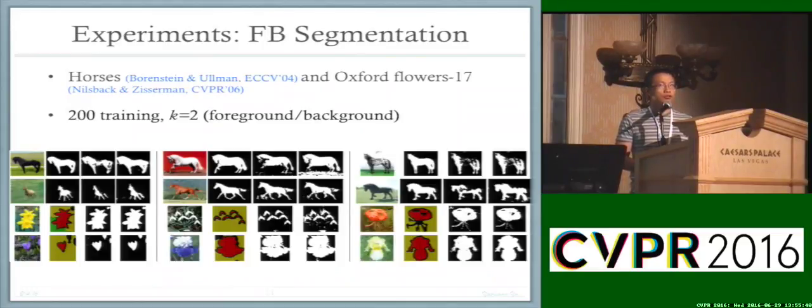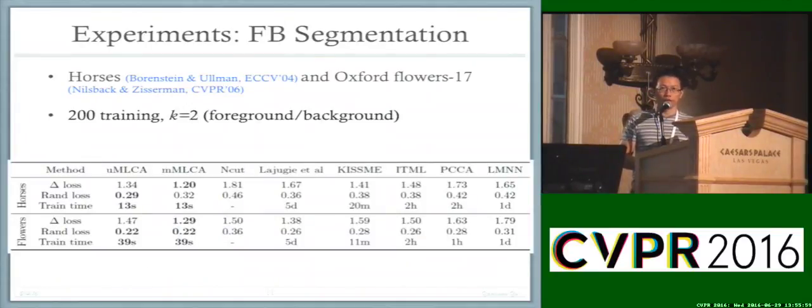We also compared quantitatively with other methods proposed in the past. In the third part of the table, you see results on the Horses dataset, and the bottom part is on the Flowers dataset. Overall, our algorithm achieved better clustering performance. More importantly, it's much more efficient. For instance, N-cut is a very popular segmentation method that requires no training—that's why training time is almost zero—but its performance is worse than ours.